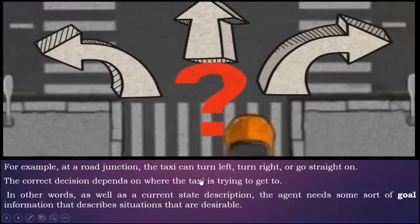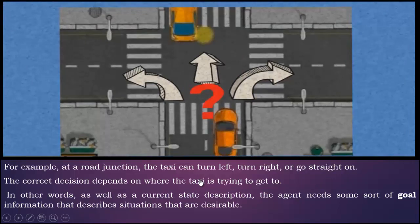In other words, as well as a current state description, the agent needs some sort of goal information that describes situations that are desirable.